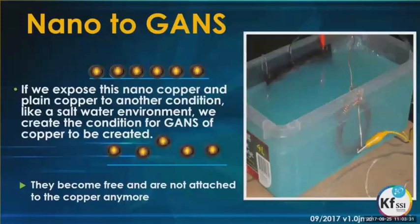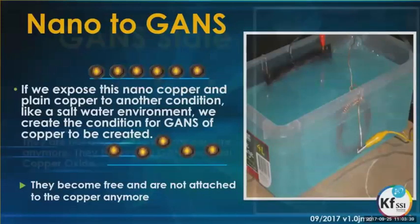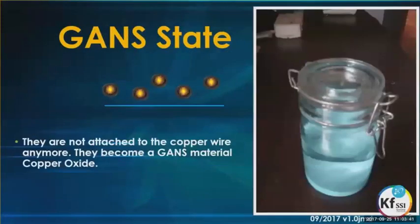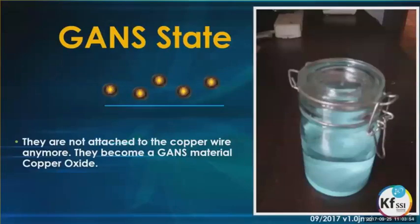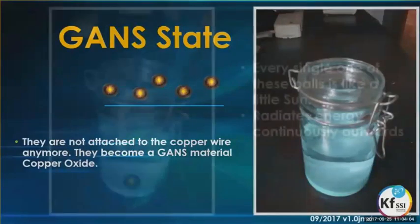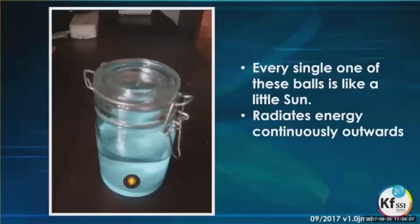These GANSes become free and are not attached to the copper anymore; they become a GANS material in copper oxide. You're looking at a picture of a jar with billions of tiny little particles — those that have already made their GANS. Each one of those tiny GANSes is now independent, not attached to anything, and essentially independent of themselves.